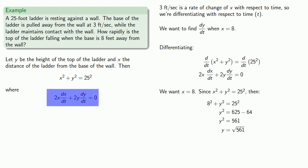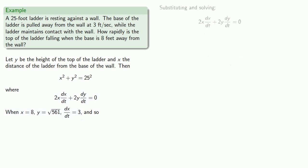So we have a derivative relationship as well as x equals eight, y equals square root 561, and dx/dt equals three. So I'll substitute those into my equation and solve for dy/dt.